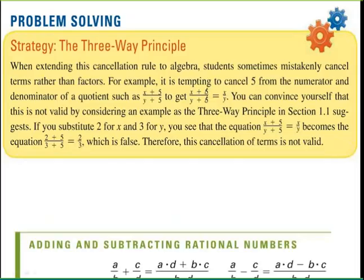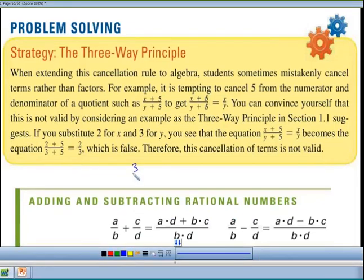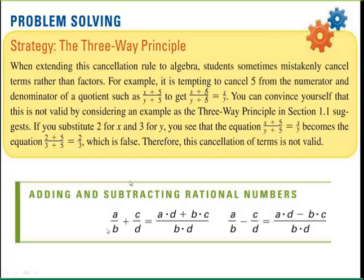You can't cancel terms added together — cancellation only works when you're multiplying. It has to be something like (3×5)/(4×5), where you're multiplying by 1, and multiplying by 1 doesn't change anything.